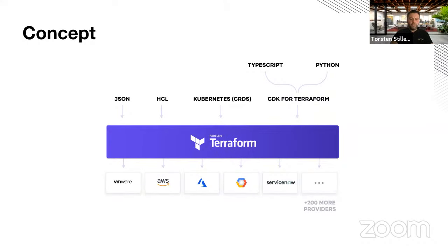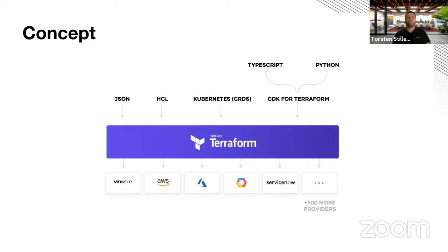There's an image here showing the different possibilities for how you can interact with Terraform. The CDK for Terraform also generates JSON — Terraform-compatible JSON. This picture illustrates all the different ways you can interact with Terraform: you can use JSON, HCL, operators in Kubernetes, and CDK for Terraform. And since I'm from Microsoft, there is also a prototype called the ARM CDK with an early pre-release hopefully coming soon.